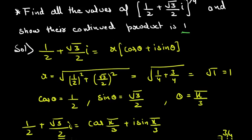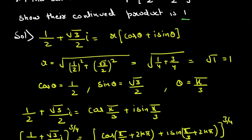Applying De Moivre's theorem, we write the expression as R(cosθ + i sinθ), where R is the square root of x² + y². Here x² is 1/4 and y² is 3/4, and taking LCM we get 4/4, and the square root of 1 is 1. So we get R = 1.